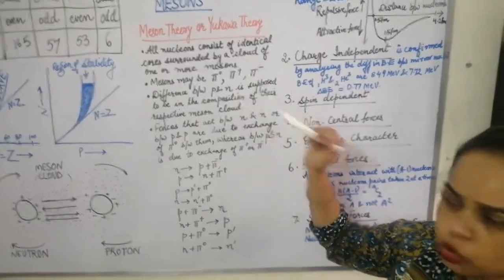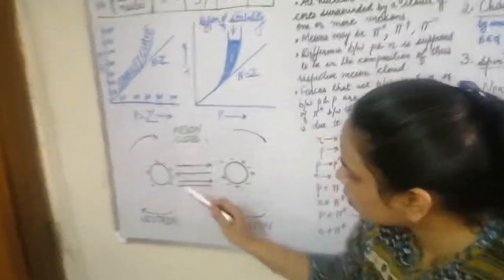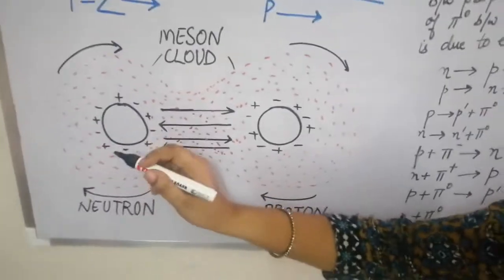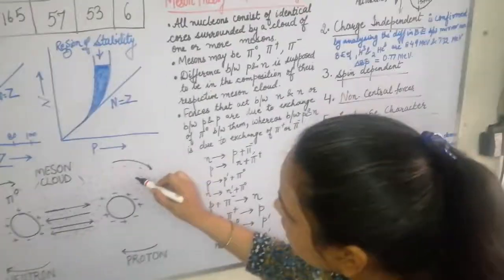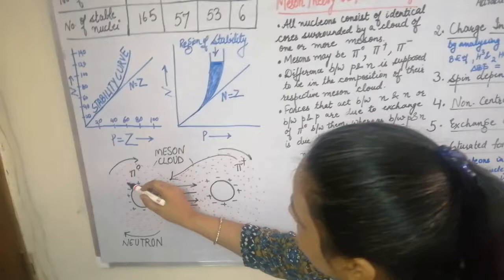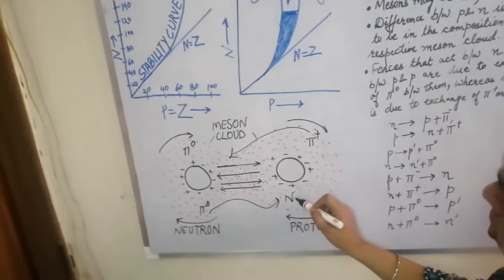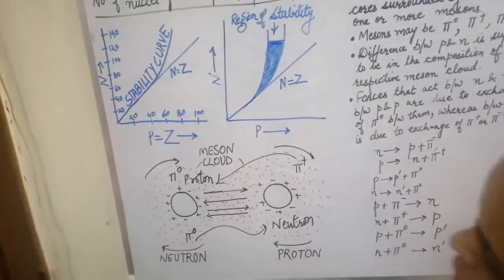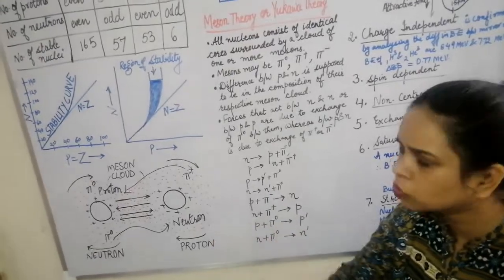The difference between the proton and neutron is in the composition of their respective meson clouds. A neutron core is surrounded by a pi-zero cloud, whereas a proton core is surrounded by pi-positive mesons. If the pi-positive shifts to the neutron side, the proton is changed into a neutron; if it shifts back, the neutron becomes a proton. This exchange of mesons determines the proton-proton and neutron-neutron binding.